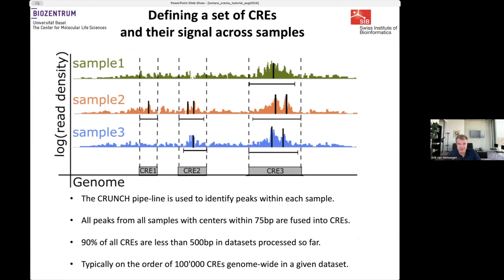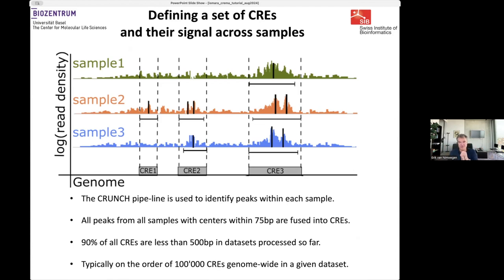In an example with three samples and peaks at various locations, peaks within 75 base pairs get merged into a single CRE. We end up with a list of CREs that are all the regions with significant openness or the relevant histone mark in at least one sample. Typically, more than 90% of CREs have a length less than 500 base pairs, and you get on the order of up to 100,000 CREs in a given dataset — an order of magnitude more than the roughly 10,000 active promoters.